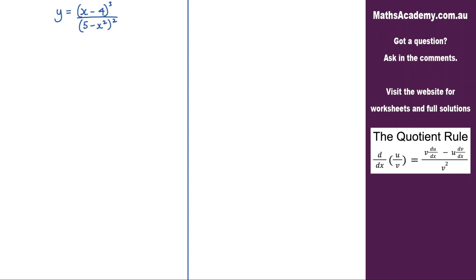The first thing we have to do is to assign u and v. Let u equal x minus 4 cubed, and v is the denominator which is 5 minus x squared, and that is all squared.